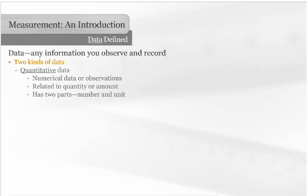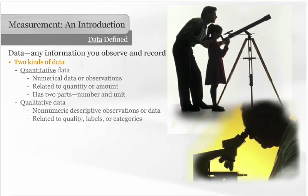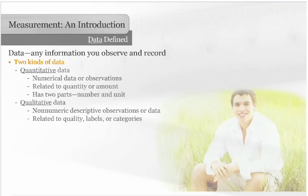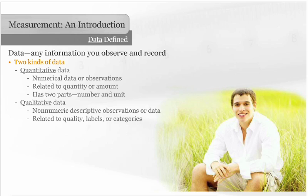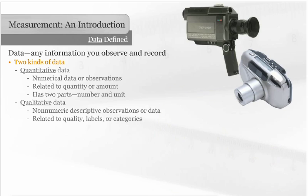The second kind of data are qualitative data, which are non-numeric descriptive observations or data that relate to quality, labels, or categories. In other words, any observations you record that are not related to numbers can be qualitative data. For instance, if you are on a nature hike, you may write down that the flowers are blue. That information is qualitative data. You might also use photographs, notes, and surveys to collect or measure qualitative data.